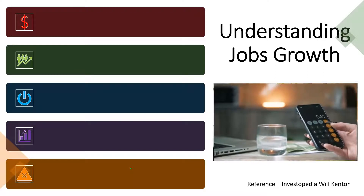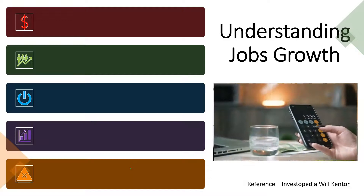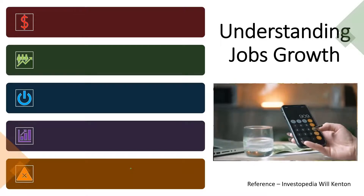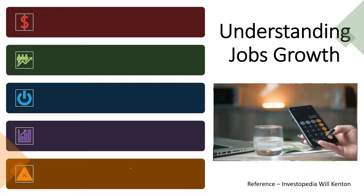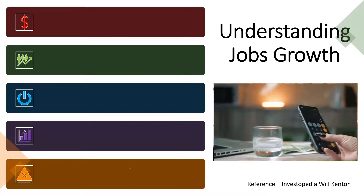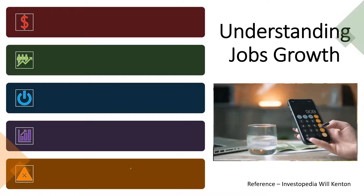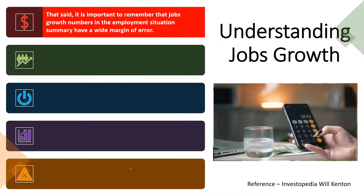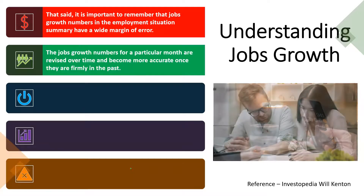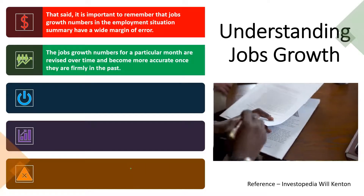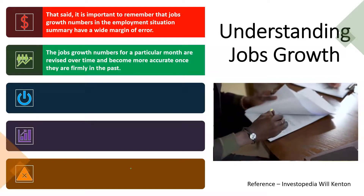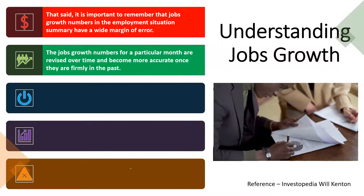What do you expect to be happening in the future? What are going to be the major drivers on the national level pulling things up? Are the regions we're looking into in alignment with those national goals? Or do the regional areas have core things necessary for the country — whether they line up to national goals or not — that are going to be needed? It is important to remember that jobs growth numbers in the employment situation summary have a wide margin of error. If you're looking at the latest numbers, those numbers are going to be subject to change and may be revised over time — the jobs growth numbers for a particular month become more accurate once they are firmly in the past.